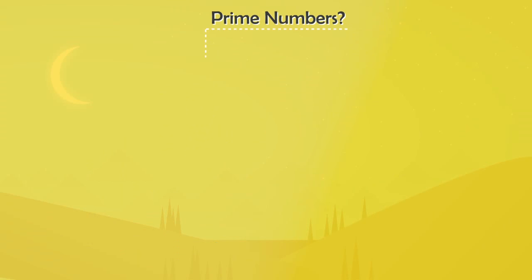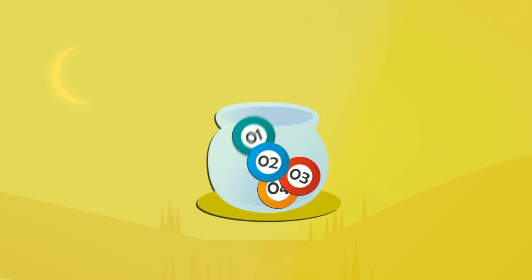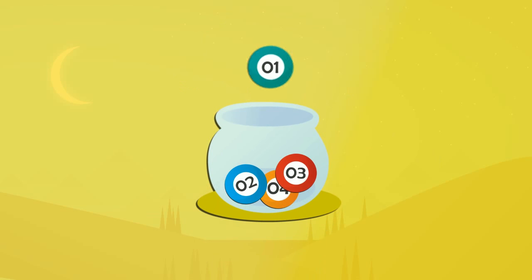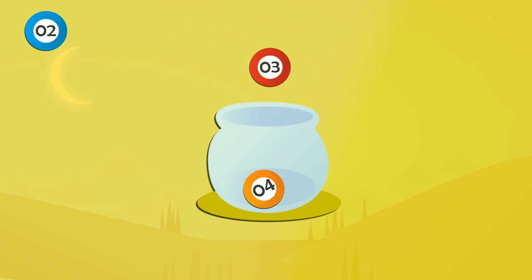So basically, a prime number should have only 2 factors and it should be greater than 1. Now let's find prime numbers in this list. Since it should be greater than 1, we neglect 1. What about 2? 2 can be written as 2 times 1. It has 2 factors. So 2 is a prime number. 3 can be written as 3 times 1. So yes indeed, 3 is a prime number.